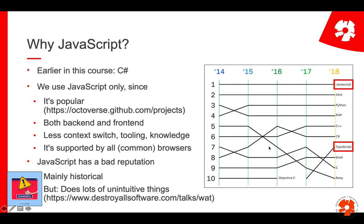Even though this is GitHub data and companies may look slightly different, it's an extremely popular language. One of the main arguments is you will have to learn JavaScript anyway, since sooner or later you're exposed to it and it is the client-side language. It makes sense to learn it, and it's good that you can use it in both front-end and back-end nowadays. You don't have to switch context or change the language, which means less context switching, fewer tools, less knowledge needed, and hopefully fewer bugs and quicker development time.